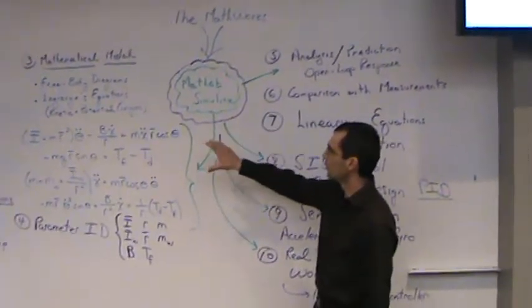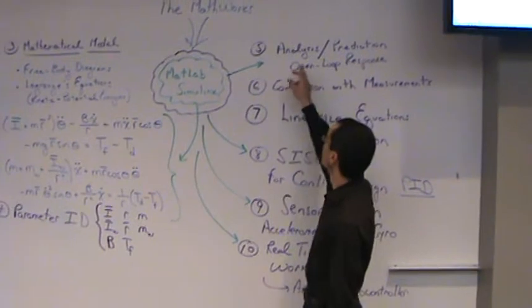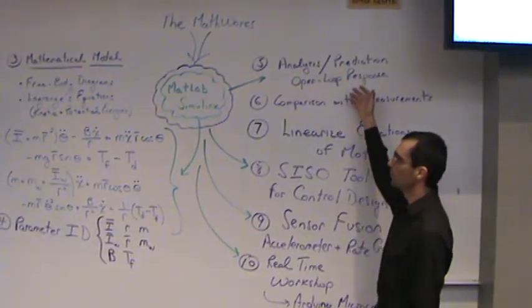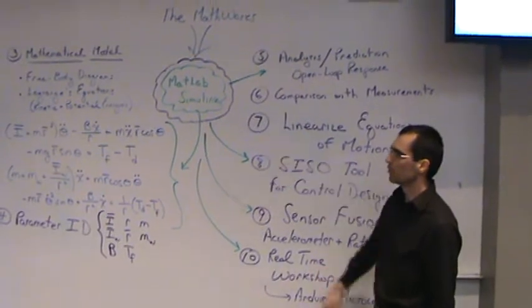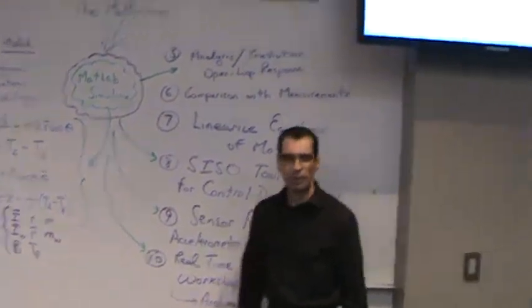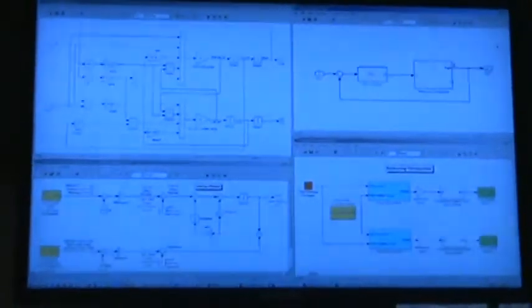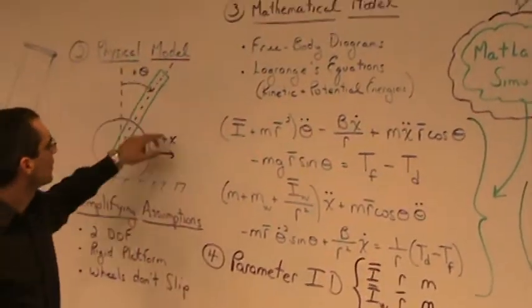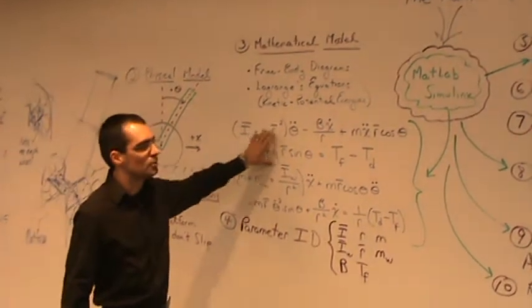On the first step, we convert those equations of motion into a Simulink block diagram. If you look at it on the screen, we see on the top that block diagram represents those two equations of motion, where we have torque as input and theta and x as outputs, which came from the physical model.